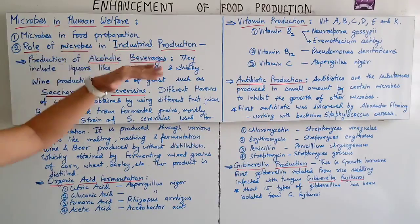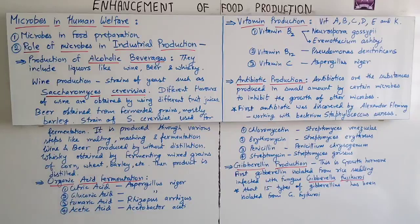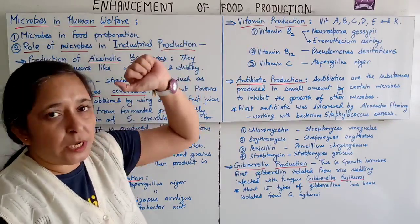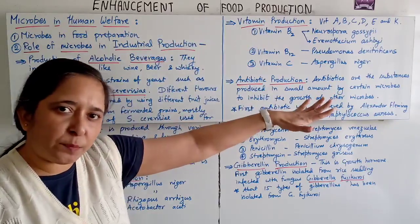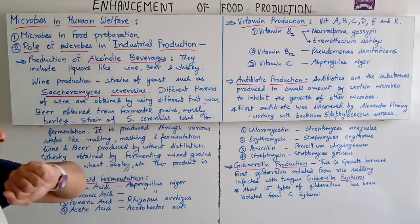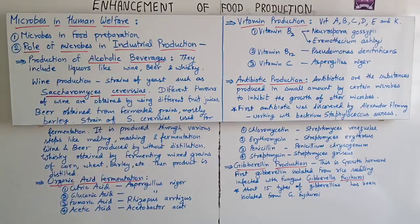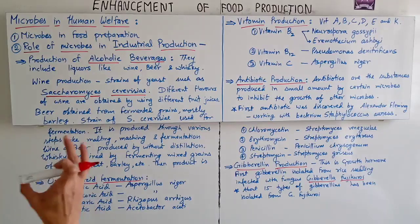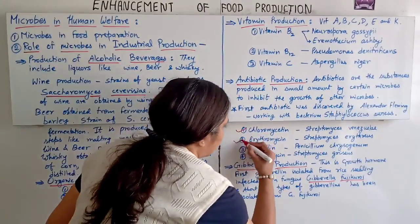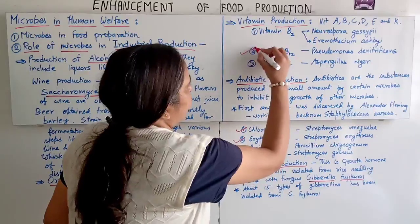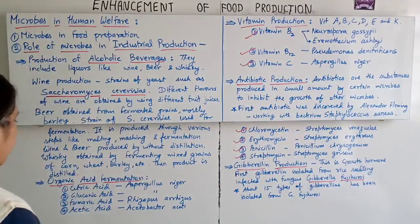So, whatever we have studied is the role of microbes in industrial production — covering production of alcoholic beverages, organic acid production, vitamin production, antibiotic production, gibberellin production, and enzyme production. Please remember the names and these examples, as they are very important.